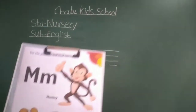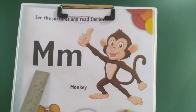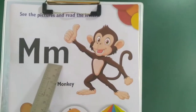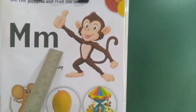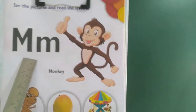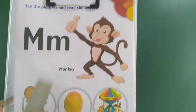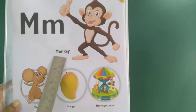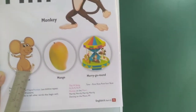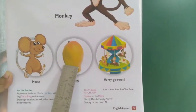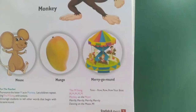This is M. Capital M and small M. M letter sounds M. M for monkey. M for mouse. M for mango. And M for merry-go-round.